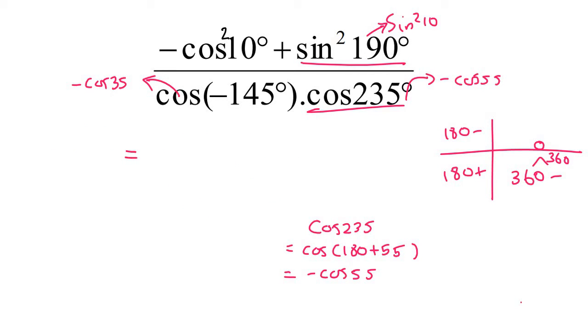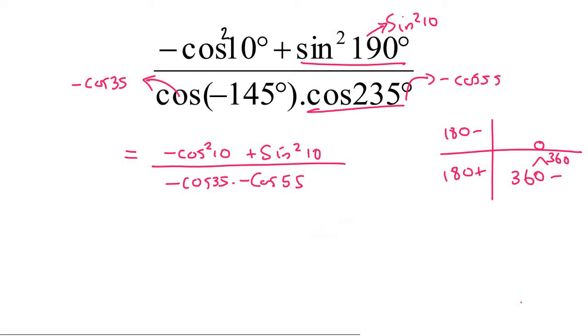Now, we can go write everything down. So it's just going to become negative cos squared of 10 plus sin squared of 10. Then at the bottom, we've got negative cos 35 multiplied by negative cos 55.